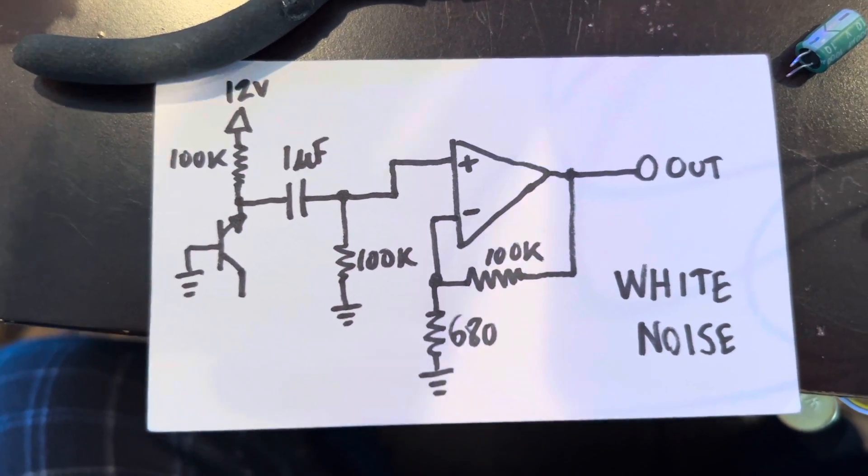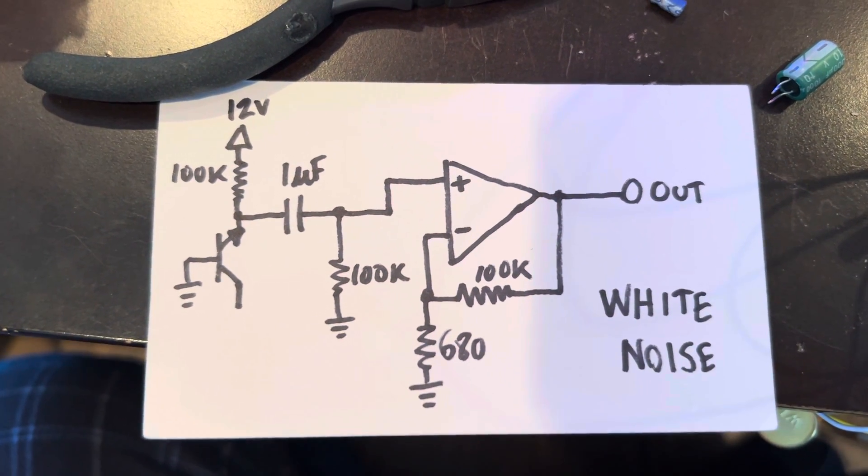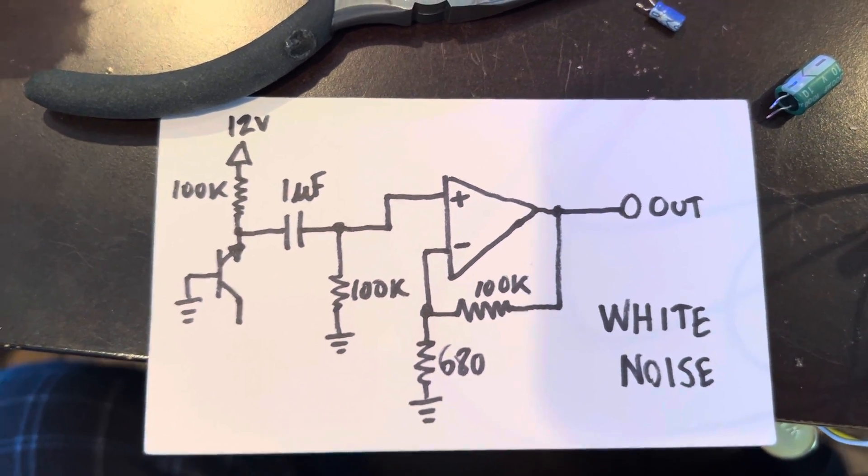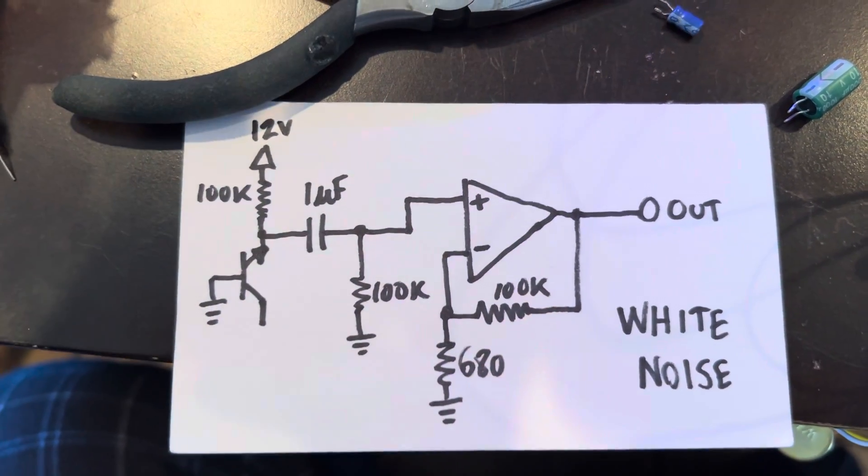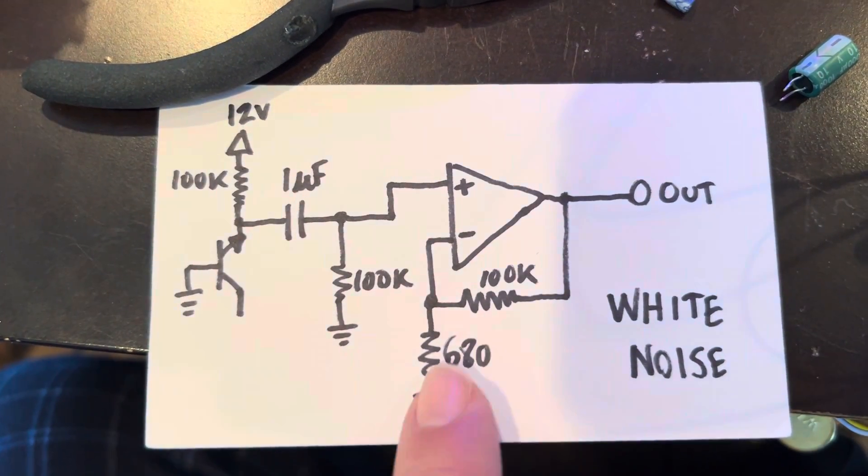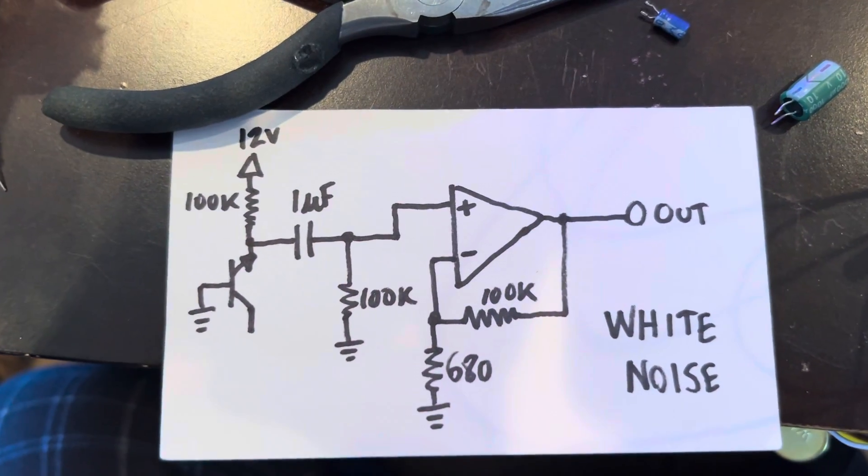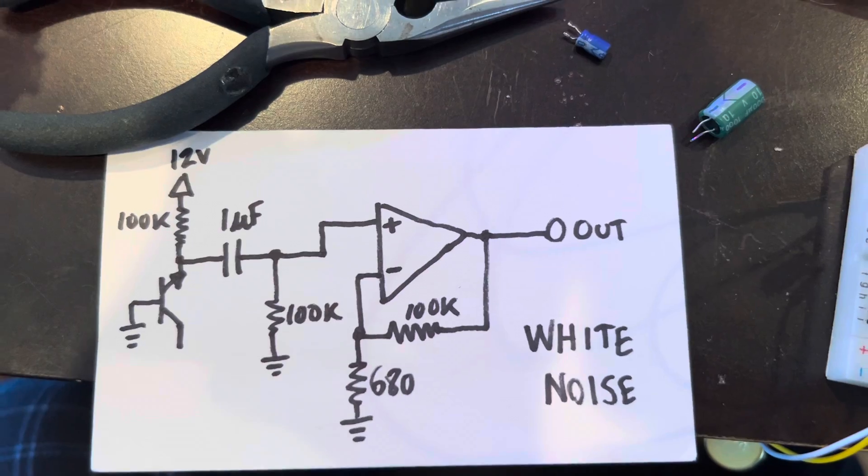This is going into a TL074 op-amp in non-inverting fashion, and this amplifies it by a factor of about 145. Then that is going out, and that's our white noise generator.